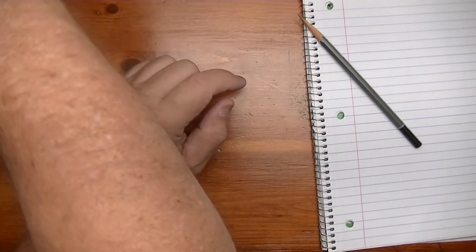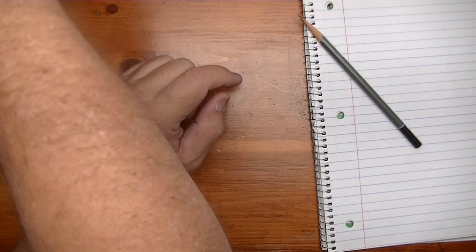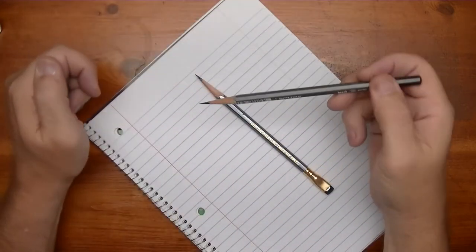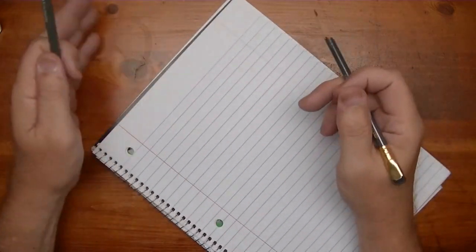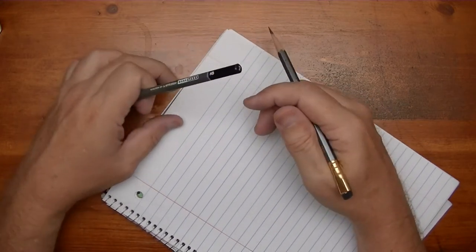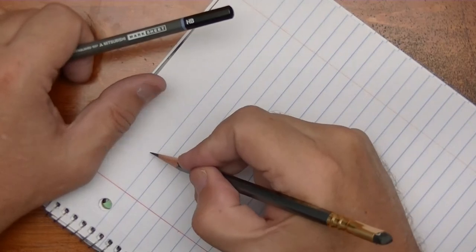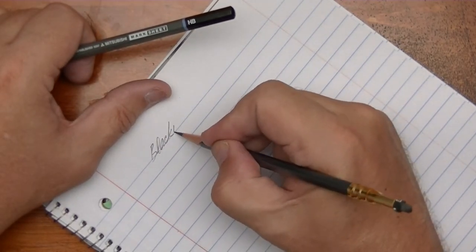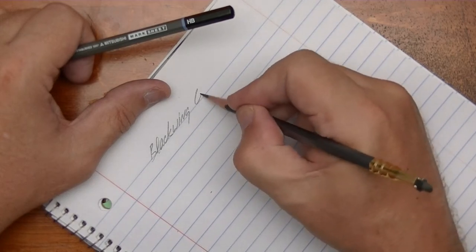Sharpen this. Okay, so we have the Marksheet. So let's compare to, this will be the Blackwing nice and smooth 602. And then we have the Uni Marksheet.